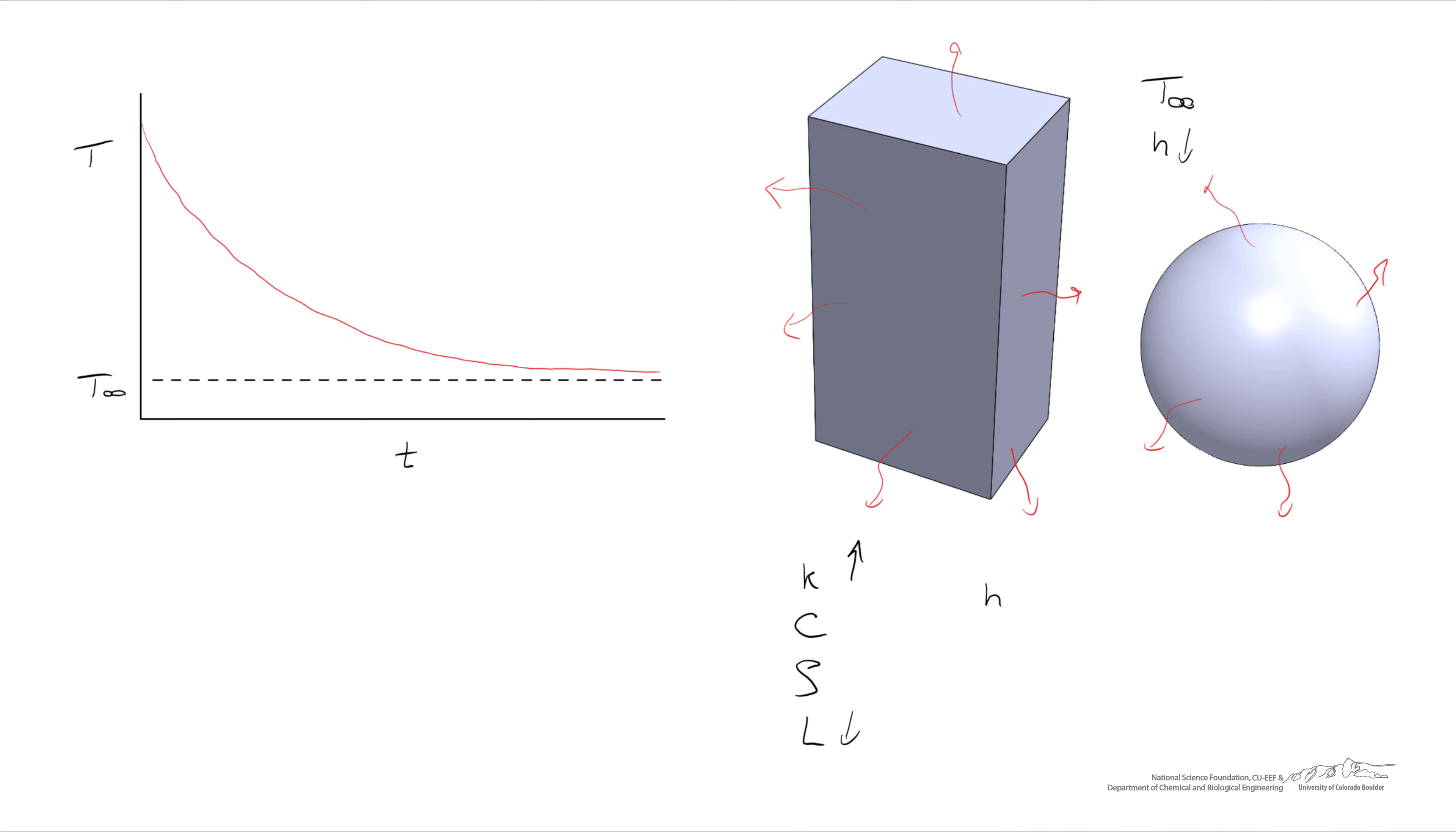A dimensionless ratio of these three parameters is the heat transfer coefficient times the characteristic length divided by the thermal conductivity of the object. And collectively that ratio is known as the Biot number. And when we use lump capacitance, we have to make sure that the Biot number is much less than one, perhaps about 0.1 or smaller.